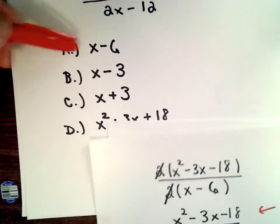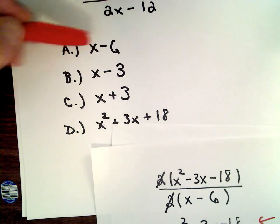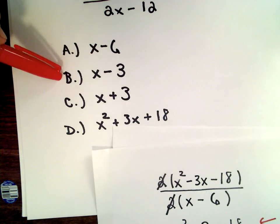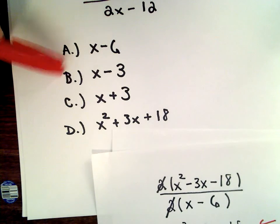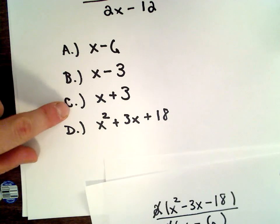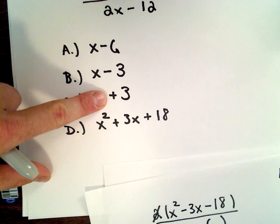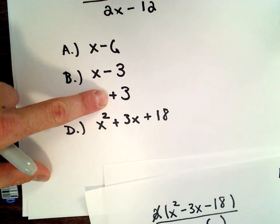Well, if you put x equals 0 into the first expression, do you get positive 3? No, you get negative 6. If you put x equals 0 into the second expression, do you get positive 3? No, you'd be left with negative 3. If you put x equals 0 into answer choice C, hey yeah, you would get positive 3, so that's the only one that works so far.